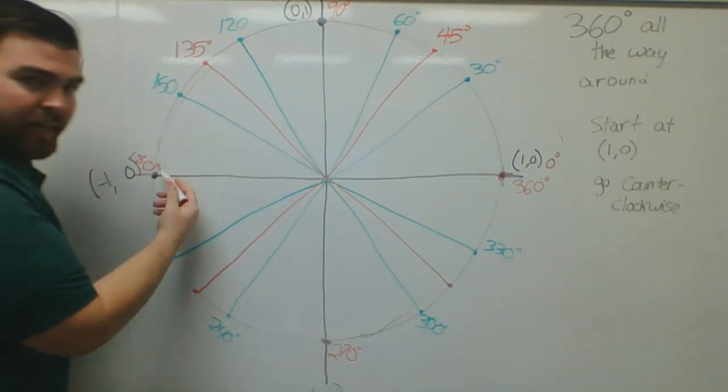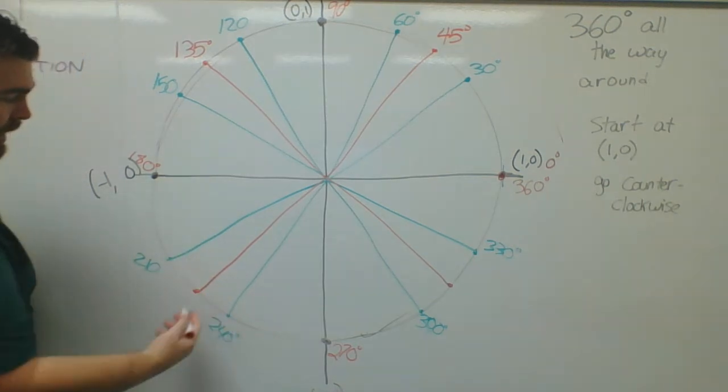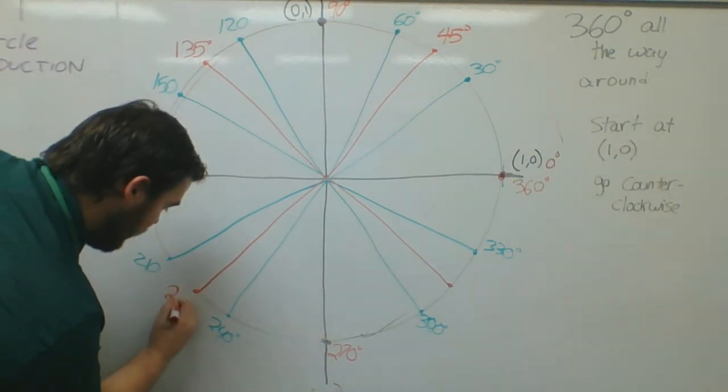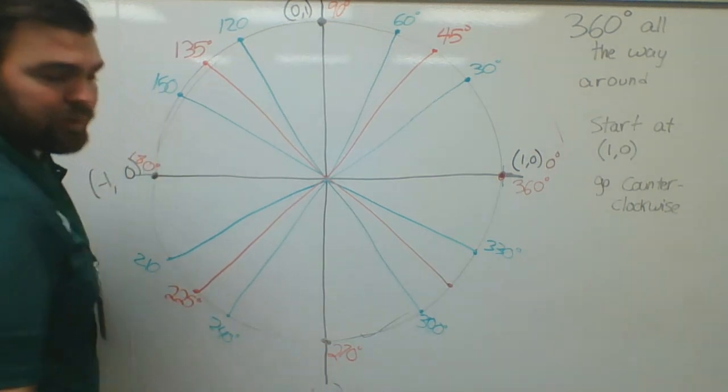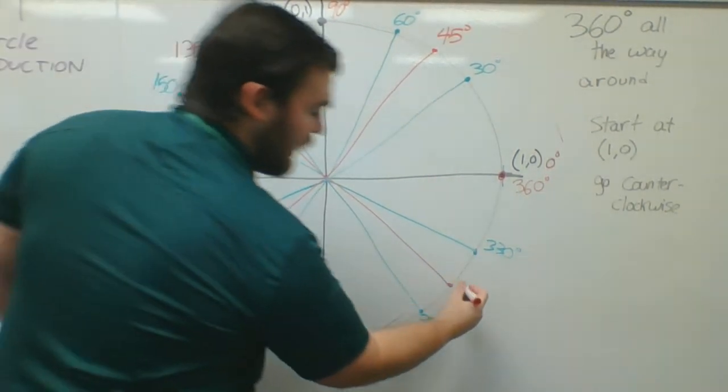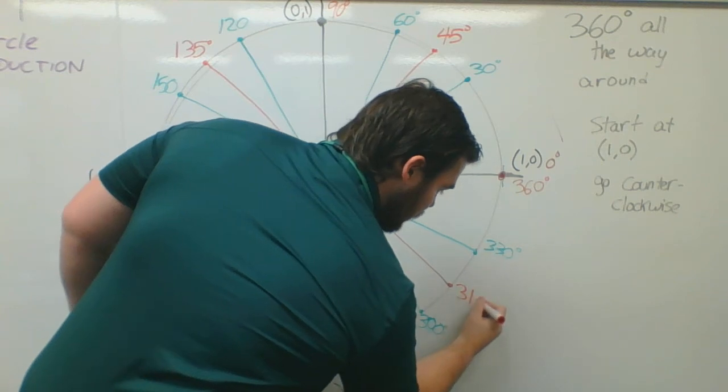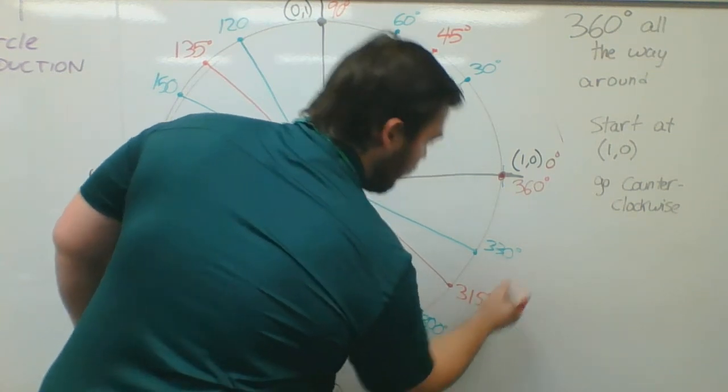So 0 plus 45, plus 45, plus 45 is going to be 135. Plus 45 is going to be 180. Plus 45, 225. Plus 45, I'm at 270. Plus 45, 315. Plus 45, then 360.